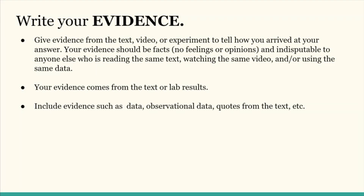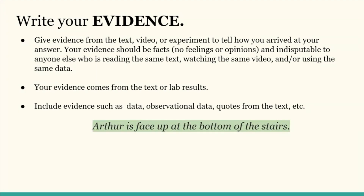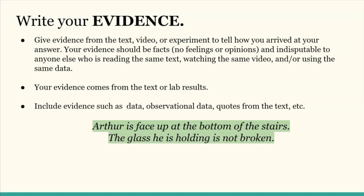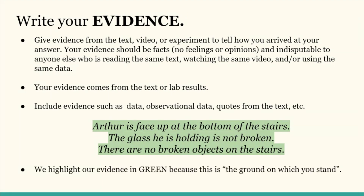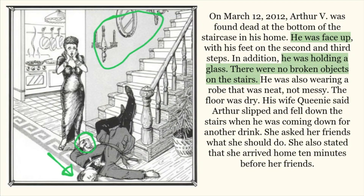For my claim that Queenie killed her husband, Arthur, my evidence that supports this is that Arthur is face up at the bottom of the stairs, the glass he is holding is not broken, and there are no broken objects on the stairs. While you may disagree with me about Queenie's guilt or innocence, you cannot dispute these facts. We highlight our evidence in green because this is the ground on which we stand when we're making our claim. You can see that I've circled in the picture and highlighted in the text where my evidence comes from. It is directly stated or directly shown in the picture, so it cannot be disputed even if someone disagrees with my claim.